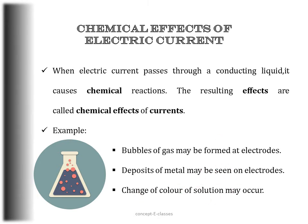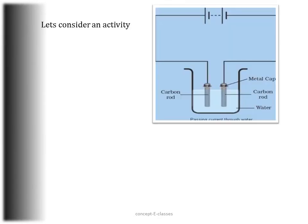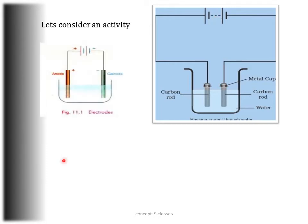To observe chemical effects of electric current, take two carbon rods from discarded cells, clean the metal caps with sandpaper, wrap copper wire around the metal caps, and join them to a battery. These two rods are called electrodes — an electrode is any type of solid through which electric current can pass. The rod connected to the positive terminal of the battery is positively charged and is called the anode.